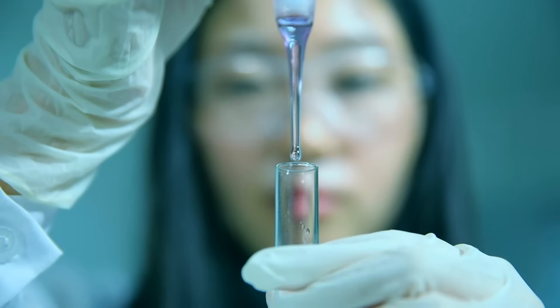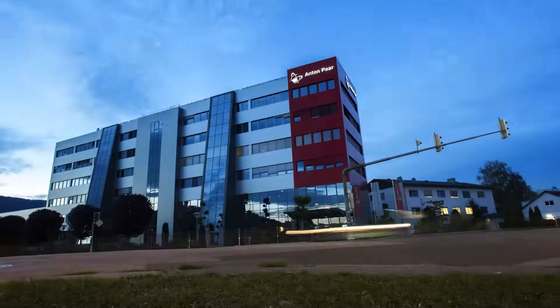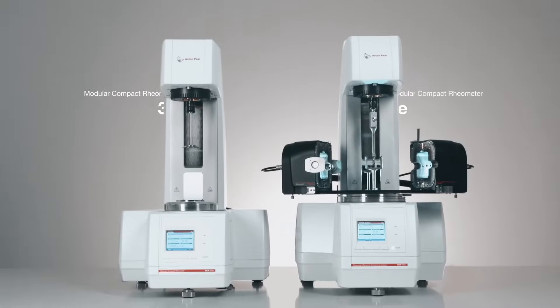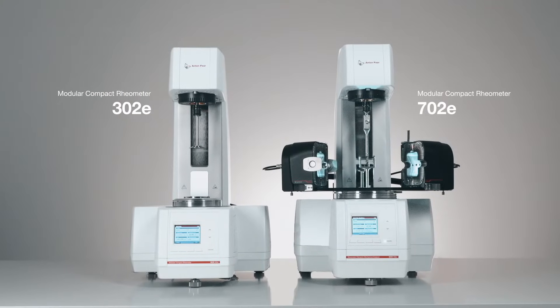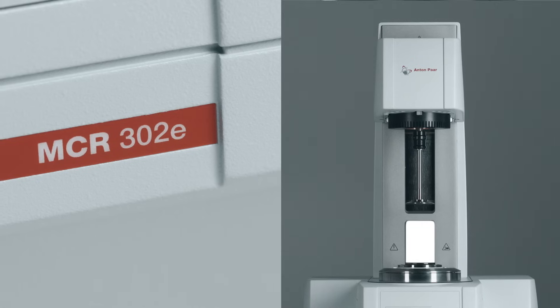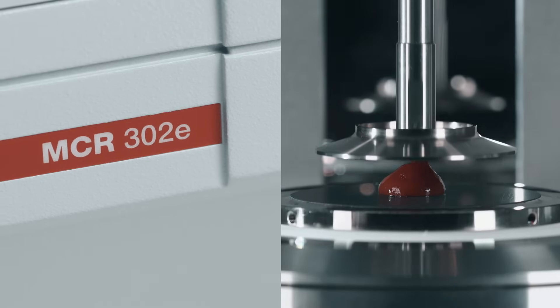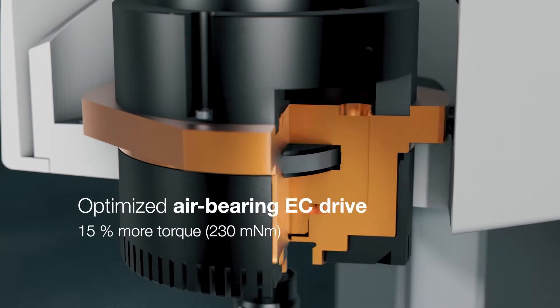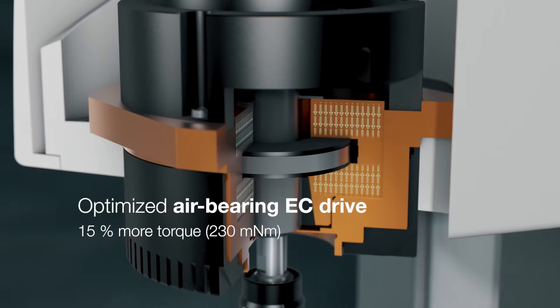For custom rheological solutions for every application, the gold standard set by Anton Parr. MCR 302 and 702 are benchmarks in their segments. MCR 302 evolution is the world's best-selling rheometer made even better: optimized air bearing, EC drive, 40% faster system electronics, improved thermal management, and one-hand coupling.